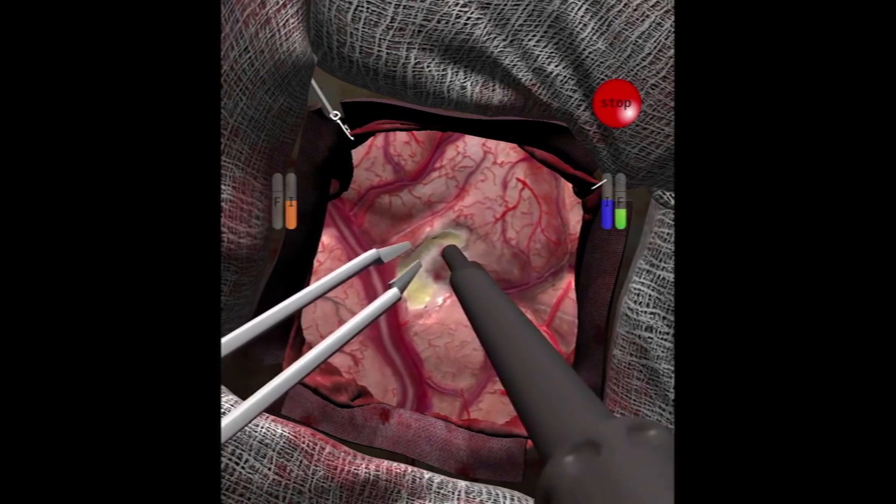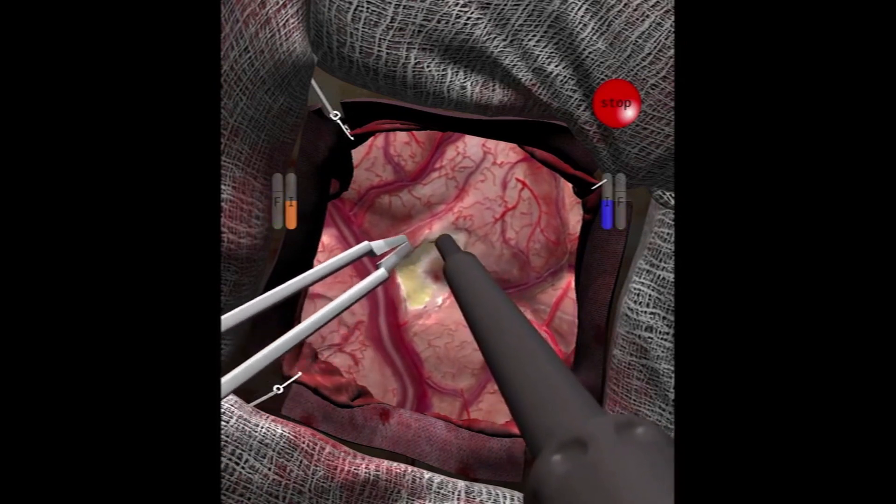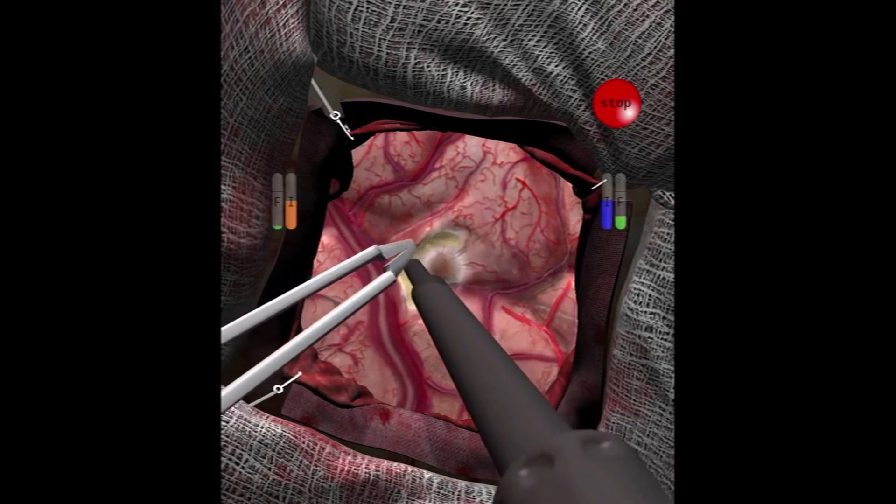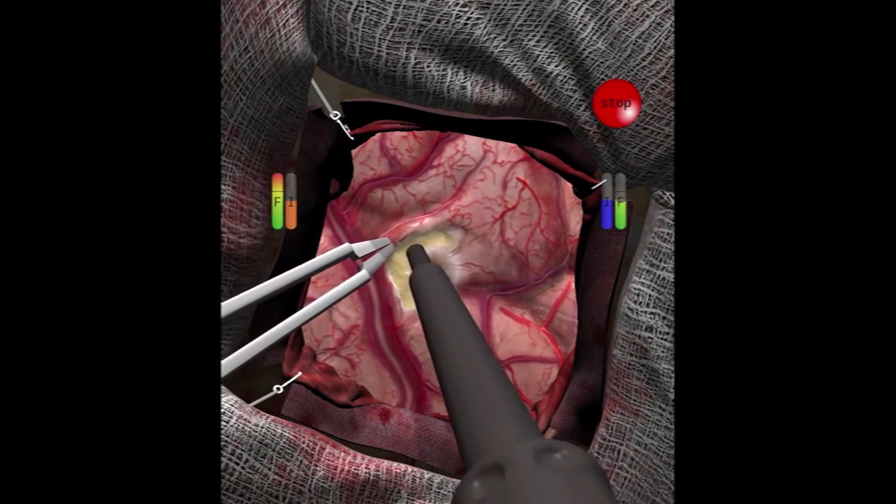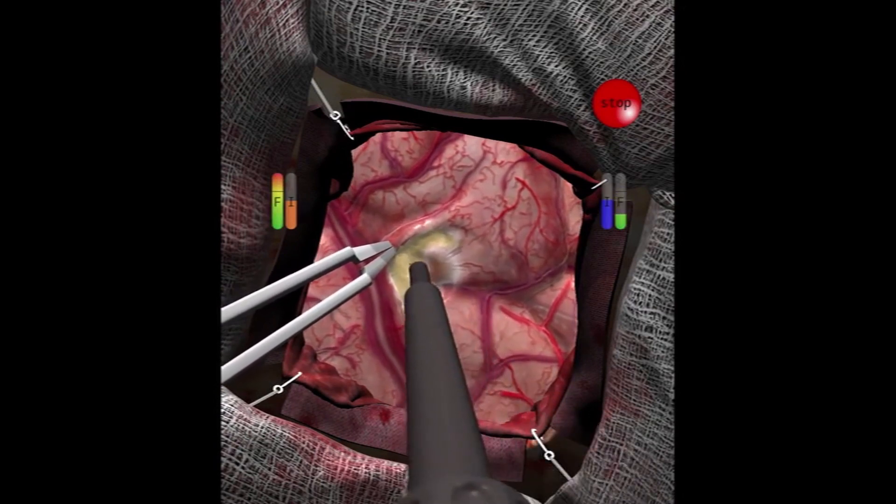Learners are encouraged to integrate the skills they've been practicing in this attempt. This participant uses the bipolar forceps to cauterize bleeding points early on and maintains a clean operative field.